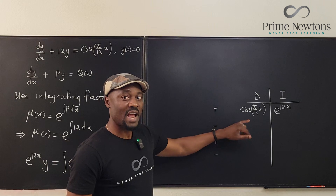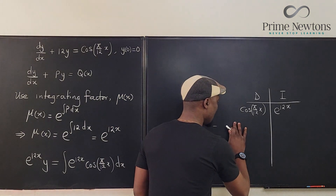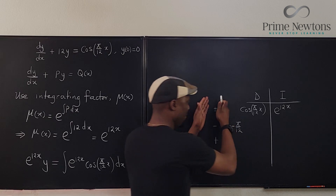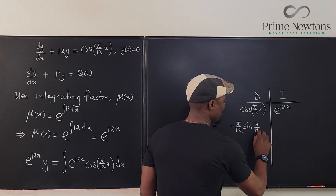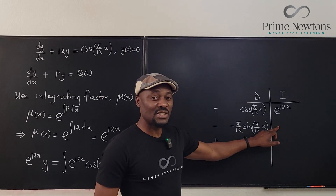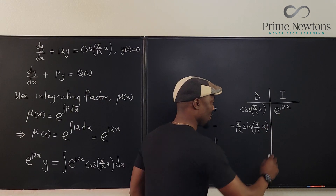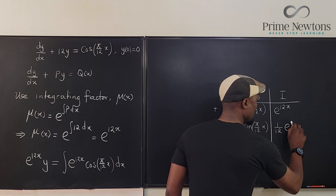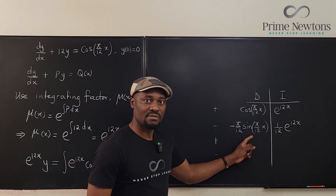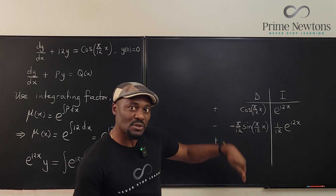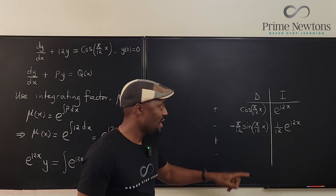Differentiating cosine gives negative sine multiplied by the derivative of the argument, which is π/12. So we get −(π/12)·sin(πx/12). Integrating e^(12x) gives (1/12)e^(12x). I'm not done because what I started with is different — when you do cosine and sine, you wait until it comes back to the original. So I differentiate one more time and integrate one more time.